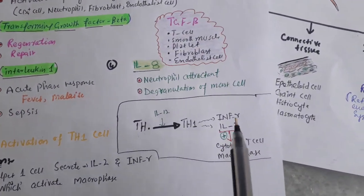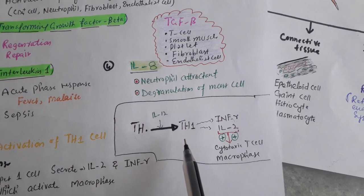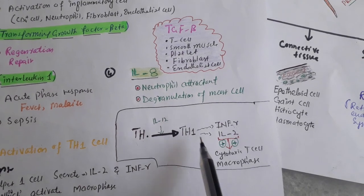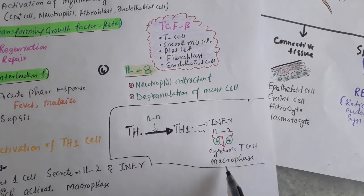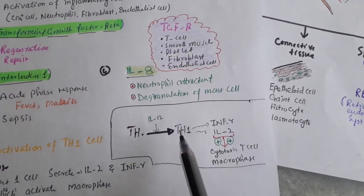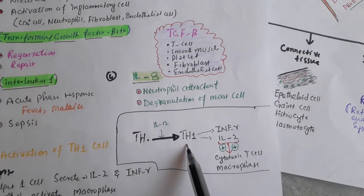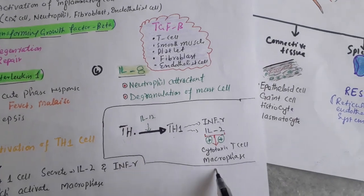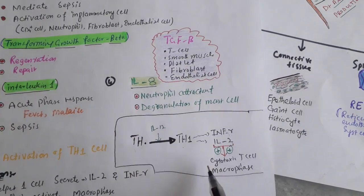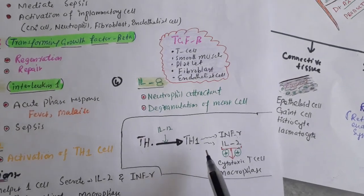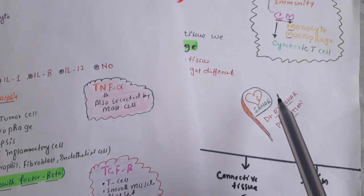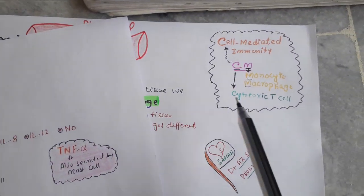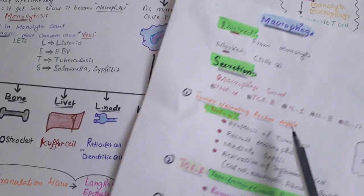T helper 1 cells activate cytotoxic T cells and macrophage, so T helper 1 cells, cytotoxic T cells, and macrophage all come under the category of cell mediated immunity.